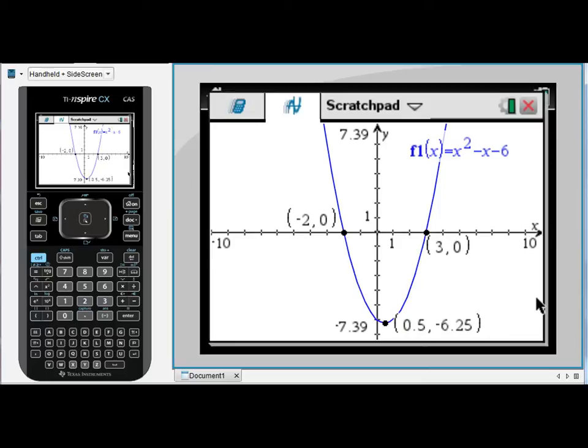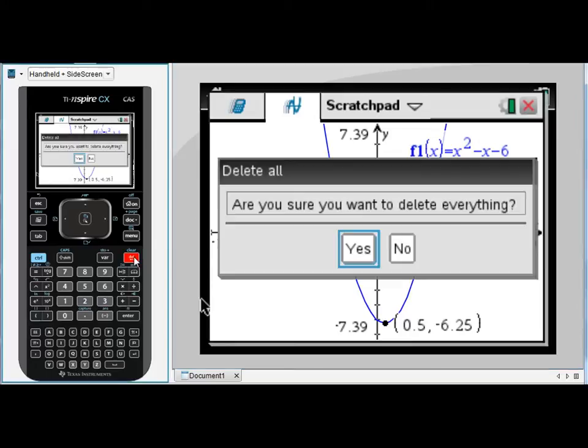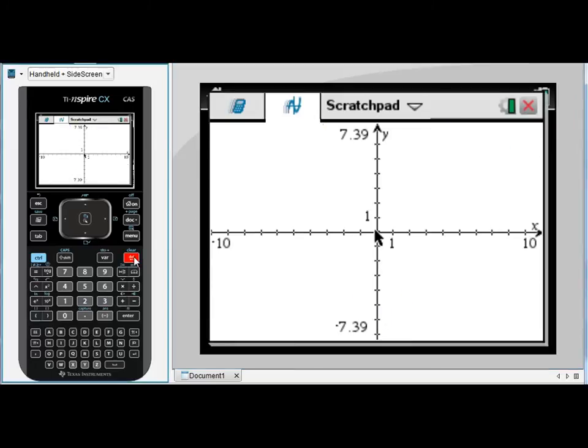Let's clear this graph and have a look at a slightly different one with some different features. The quickest way to clear the screen in the graphing module is to simply press delete three times. It will ask you, are you sure you want to delete everything? Yes. And I start again.